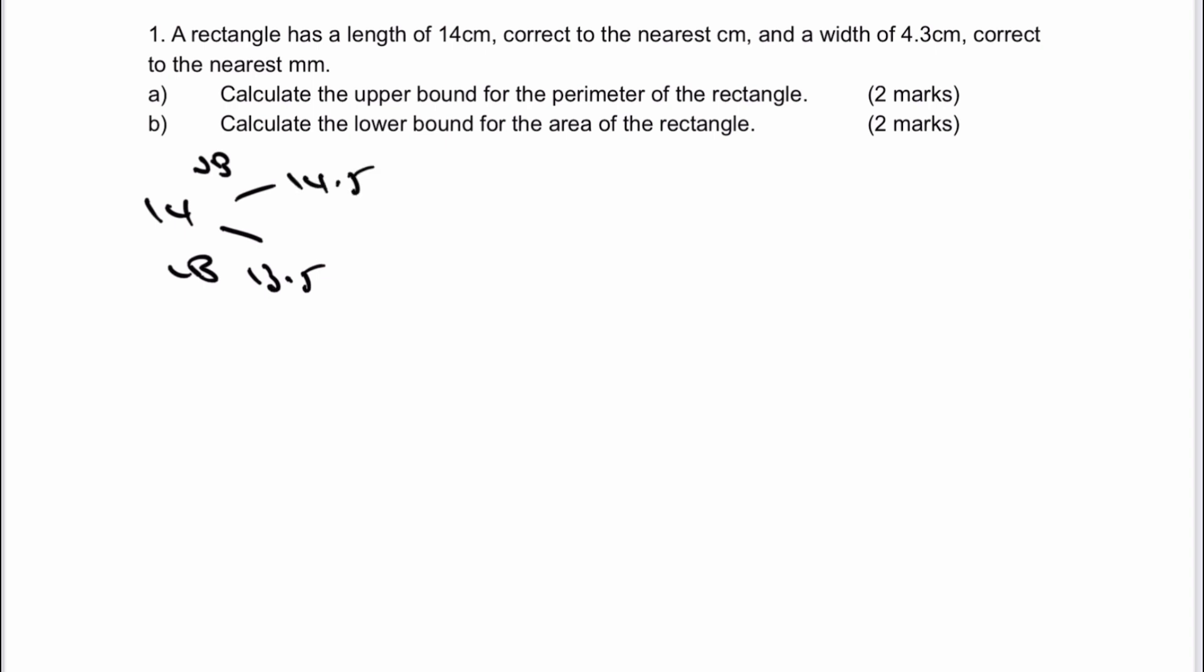Let's have a look then at the width of 4.3 centimeters. Now it says correct to the nearest millimeters. Well, the millimeter part of it is the three, because that would actually represent three millimeters. So therefore, the lower bound is going to be 4.25 centimeters, and then the upper bound is going to be 4.35 centimeters. If you're not sure about any of these, please do let me know, and I'll provide a link for you.